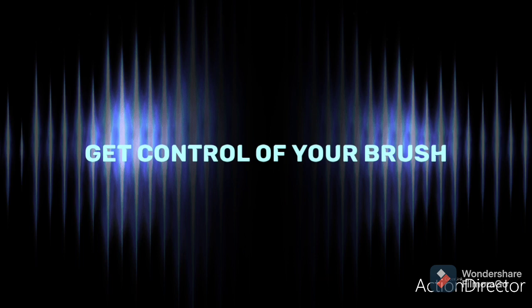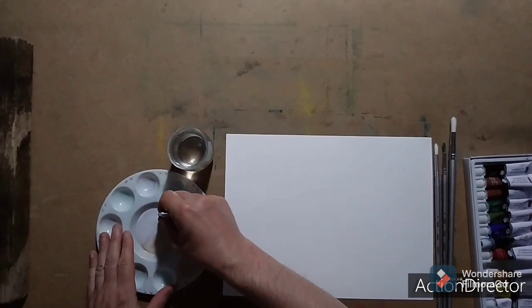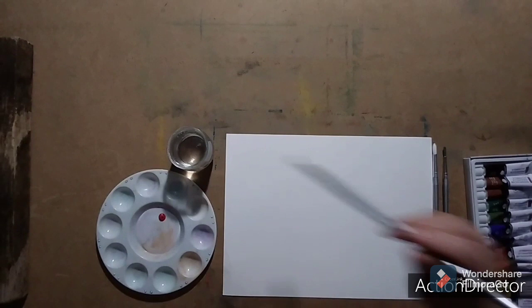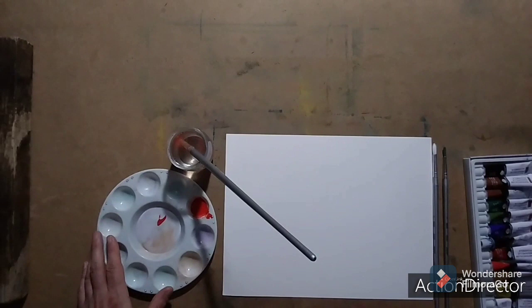Let's do a little exercise called get control of your brush. First start by placing your watercolor paper in the landscape position. Then prepare some watercolor paint in your palette. Now with your ruler, draw a vertical line through the middle.